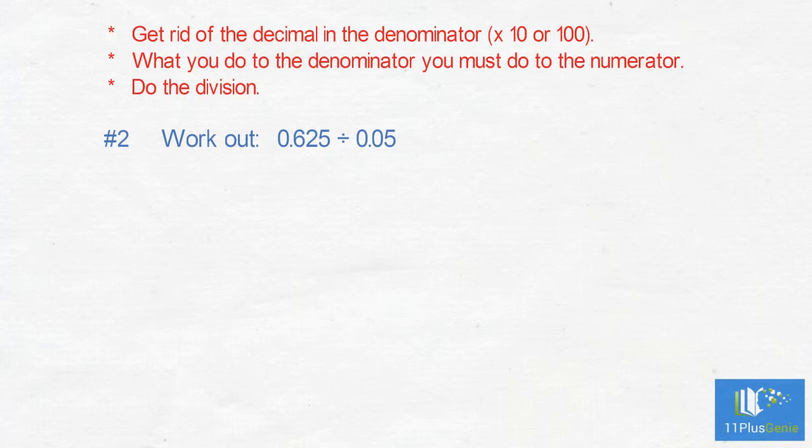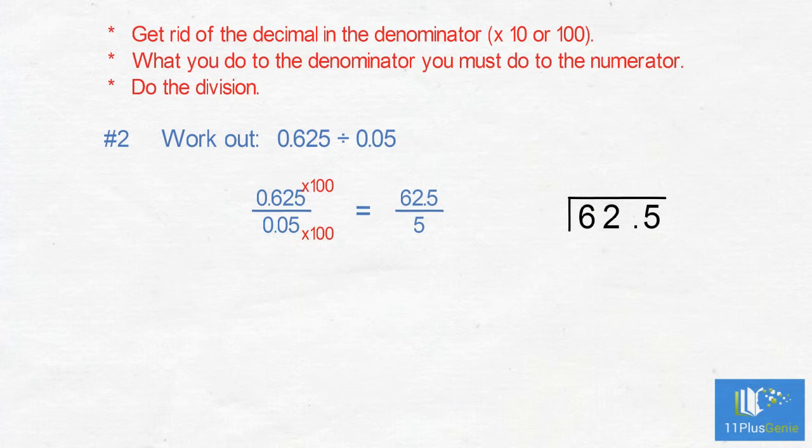We get rid of the decimal in the denominator by multiplying by 100. 0.05 times 100 equals 5. We must times the numerator also by 100, which gives us 62.5. We divide 62.5 by 5.